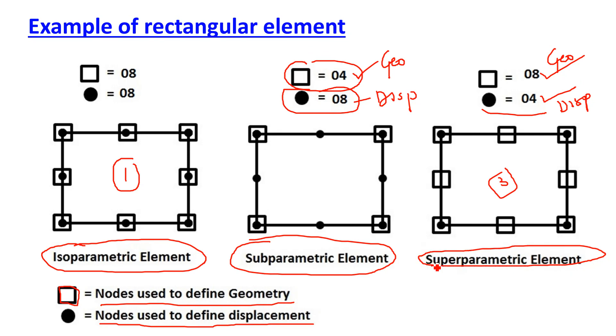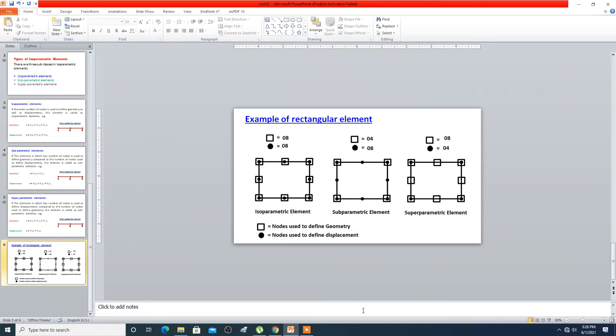These are the three types of isoparametric element. I hope all of you have understood what are the types of isoparametric formulation. Thank you very much.